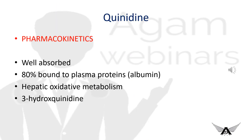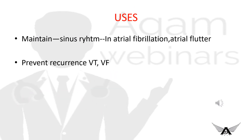Quinidine is the first antiarrhythmic drug, used since the 18th century — the bark of the cinchona plant was used to treat rebellious palpitations. It increases the threshold of excitability, decreases automaticity, and prolongs the AP duration. Pharmacokinetically, it is well absorbed, 80% bound to plasma proteins, and undergoes extensive hepatic oxidative metabolism. It is used to maintain sinus rhythm in atrial flutter or atrial fibrillation, and to prevent recurrence of ventricular tachycardia or ventricular fibrillation.